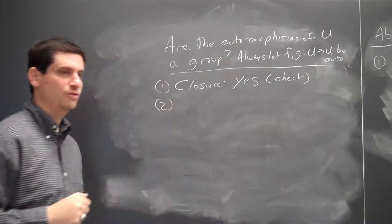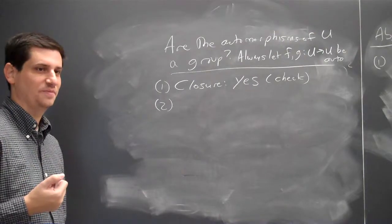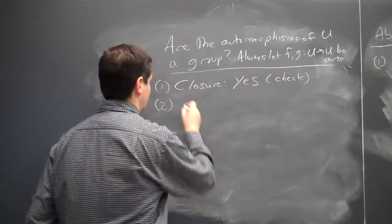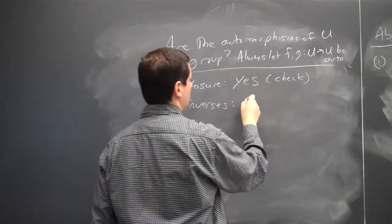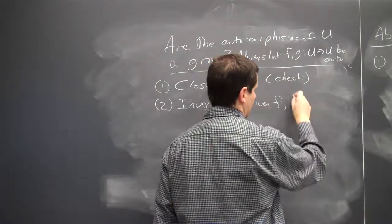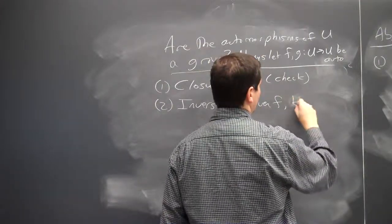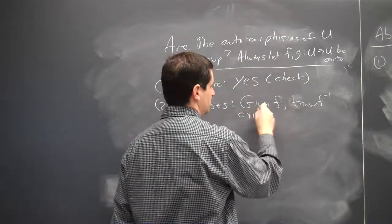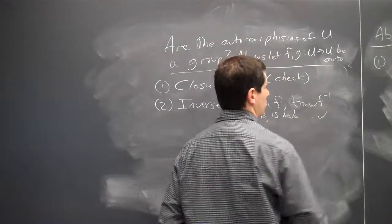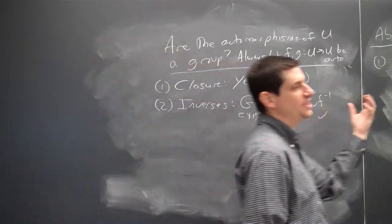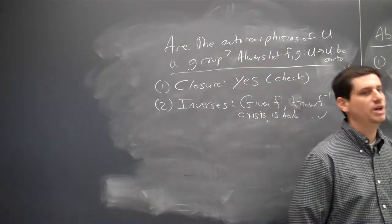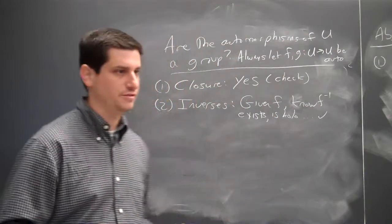What's another property we should have? Inverses exist. Given F, we know F inverse exists and is holomorphic. This is again basically chasing the definitions of one-to-one and onto. Because F is one-to-one and onto, its inverse is one-to-one and onto. By the chain rule, F is differentiable so F inverse is differentiable. Inverses exist.